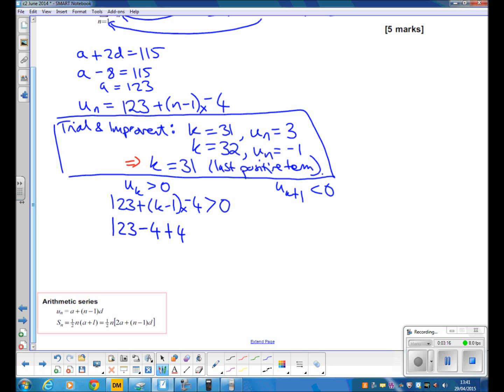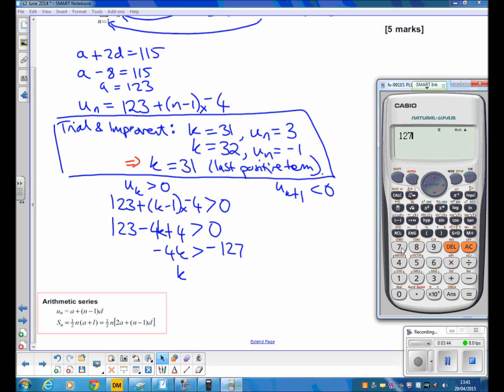Which means negative 4k is greater than negative 127, which is 123 plus 4 moved to the other side. So k is less than 31.75. At this point we're dividing by negative 4, which means we change the sign in the inequality. Remember when we divide by negative numbers, k is less than 31.75.